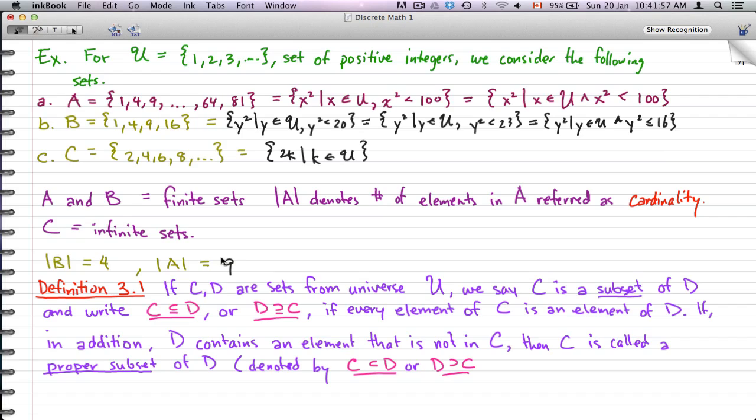Now, we're going to finish this off with a definition. So, if C and D are sets from the universe U, we say C is a subset of D, and we write C ⊆ D. So what you see here is if C is a subset of D, then the subset of D is where we have our U pointing to D. If every element of C is an element of D, so if all the elements are in C, they also exist in D, then we call that a subset of D.